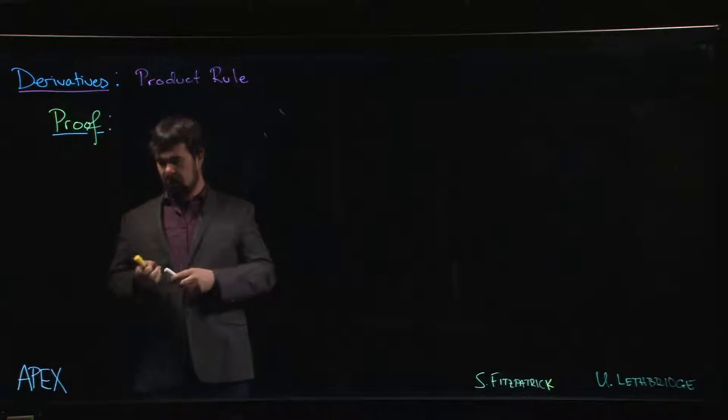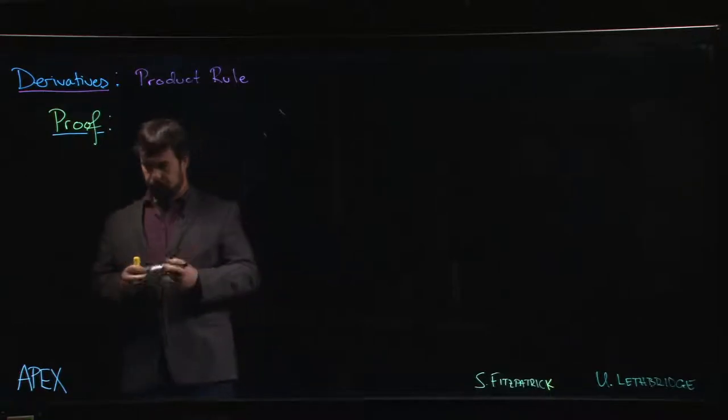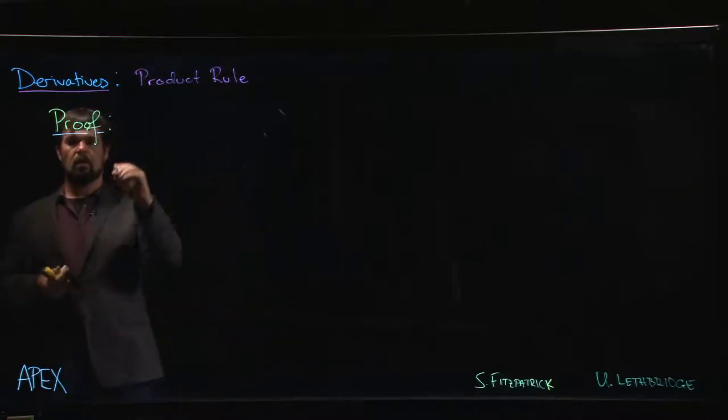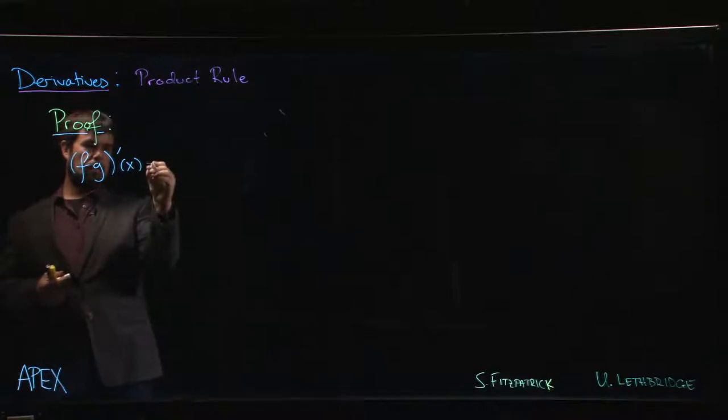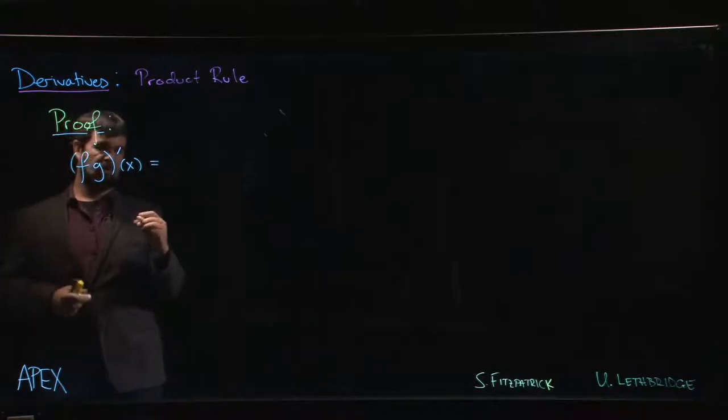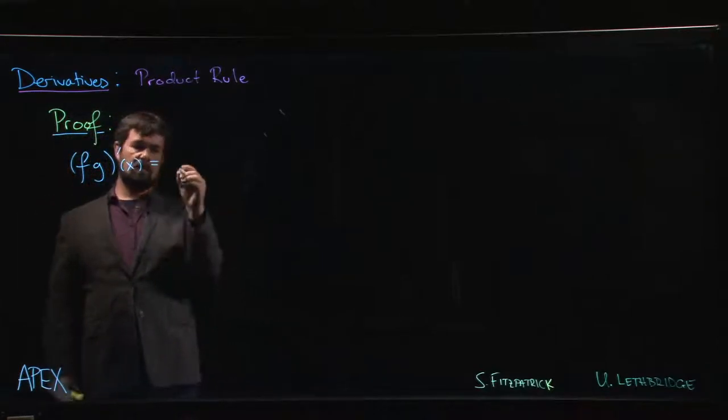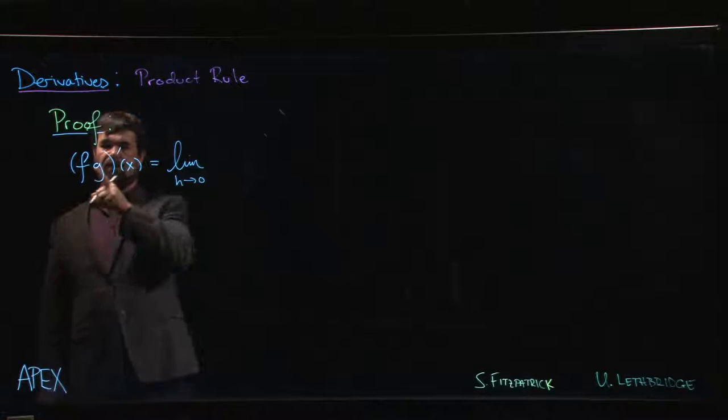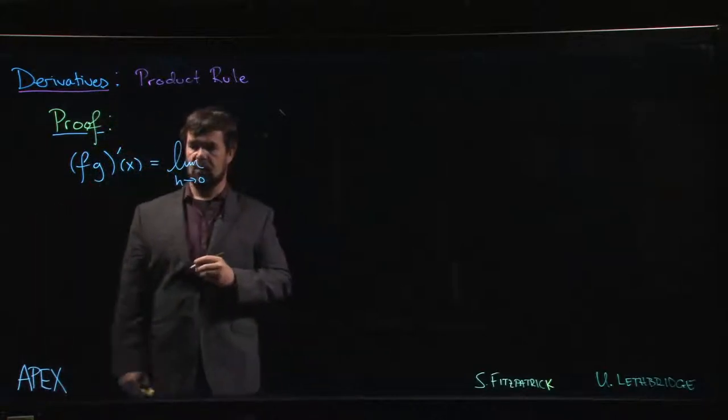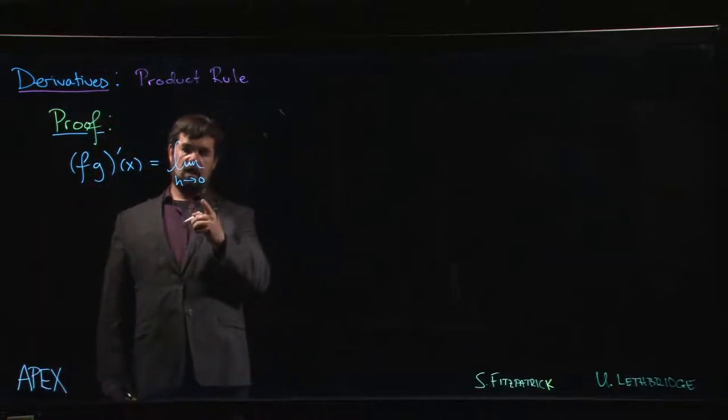We're going to look at the details and of course first step, if we don't know anything else, is to look at the definition. So the definition of the derivative says that the derivative of f times g at x is going to be the limit as h goes to zero...